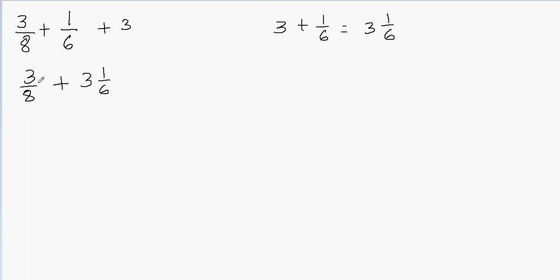Now, since this is in fraction form, we need to convert 3 1/6 into a fraction as well. So what I'm going to do is convert this mixed fraction into an improper fraction. We multiply the denominator with the whole number — so 3 times 6 gives me 18. Now I'm going to take 18 and add it to the numerator: 18 plus 1 will be 19. So my new numerator is 19, and I have 6 in the denominator, which remains as it is.